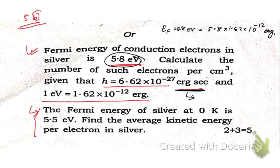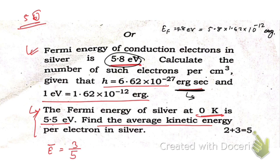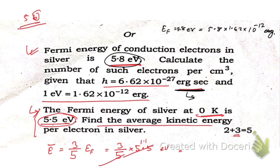Now let's go to the next part of the question. The Fermi energy of silver at zero Kelvin is given — find the average kinetic energy. We know that the average kinetic energy is given by three-fifths times the Fermi energy at absolute zero. The Fermi energy is given as 5.5 eV, so three-fifths of 5.5 — which gives 1.1 times 3 — equals 3.3 electron volts.